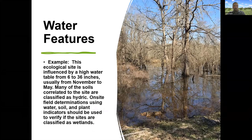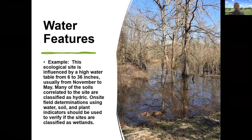The next section on an ecological site description covers water features. On upland sites in arid parts of the state there's not much to say, but throughout the landscape there are water-receiving positions. Water features are often influenced by floodplains, high water tables, or depressional areas that receive water. These can impact how a site can be managed and the suite of species that might grow there, including potential for hydric soils.